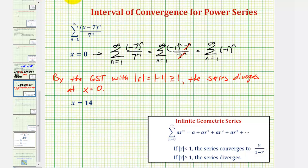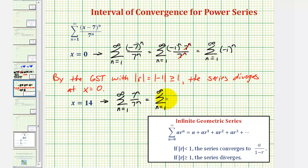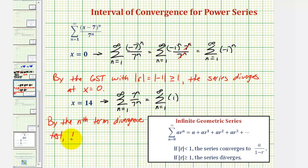Now we'll test at x equals fourteen. When x equals fourteen, we'd have the summation from n equals one to infinity of seven to the n divided by seven to the n. Since the bases are the same, we subtract the exponents, giving us seven raised to the power of n minus n, which is seven to the zero, equals one. By the nth term divergence test, since the limit as n approaches infinity of one doesn't equal zero, the series diverges at x equals fourteen.